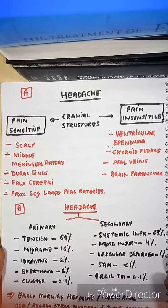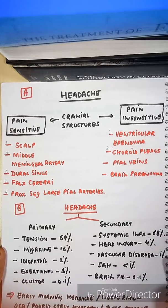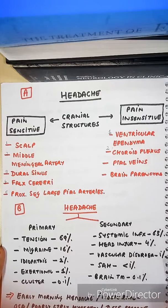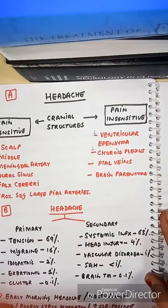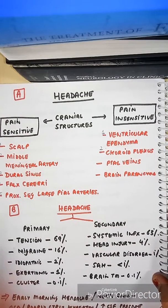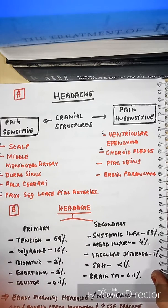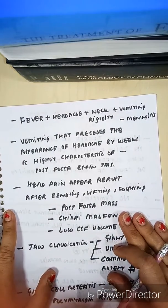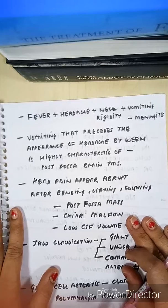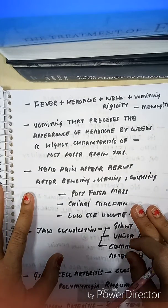Early morning headache or nocturnal headache is very important and alarming — it tells you about raised ICP (increased intracranial pressure). Always go for brain imaging in such a patient, as it suggests a space-occupying lesion. If a patient has fever, headache, neck rigidity, and vomiting, this tells you about meningitis.